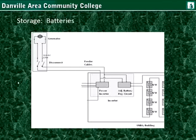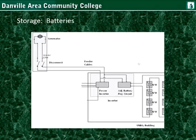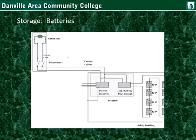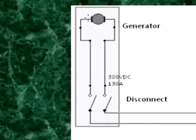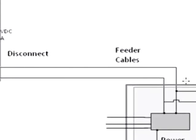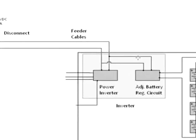Storage. Batteries are often used in grid-tied and stand-alone systems during higher demand, when the generator is either not producing enough or winds are not sustained. Here we see the DC generator, a disconnect circuit, the feeder cables going to a utility building, where it houses the inverter that has a regulator circuit for the batteries, and also a power inverter to feed into the grid and to the home.